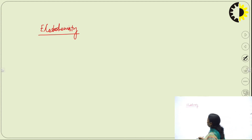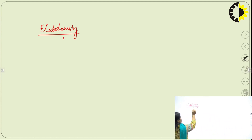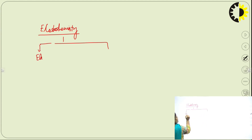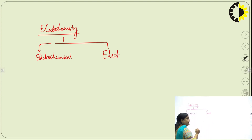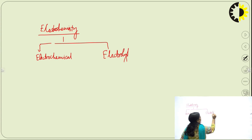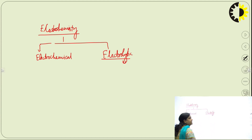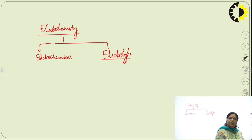There are two types of cells. First is the electrochemical cell and second is the electrolytic cell. Electrochemical cells are those types of cells which directly convert chemical energy into electrical energy, while in an electrolytic cell, electrical energy is required to drive a chemical change and produce a reaction.